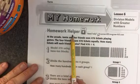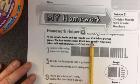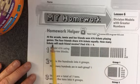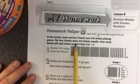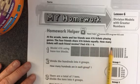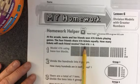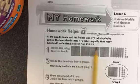Alright, let's look at the homework helper section. At the arcade, Jamie and her friends won 476 tickets playing games. The four friends share 476 tickets equally. How many tickets will each friend receive? Find 476 divided by 4.